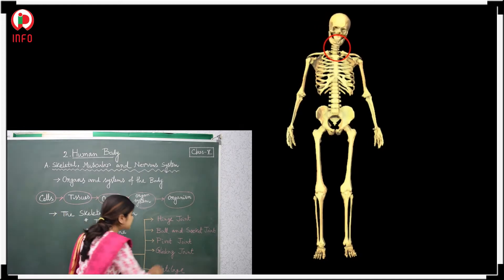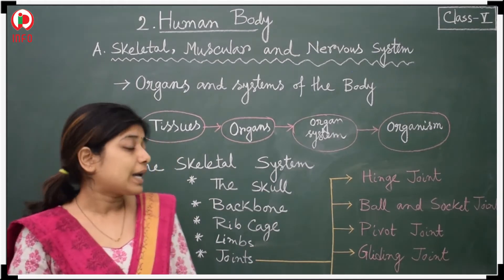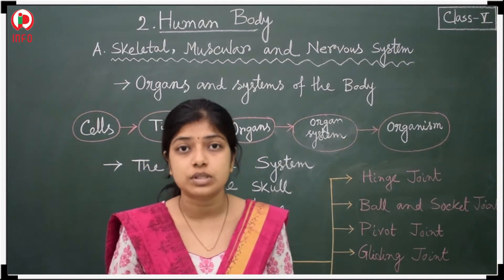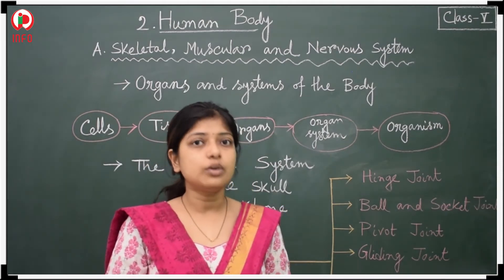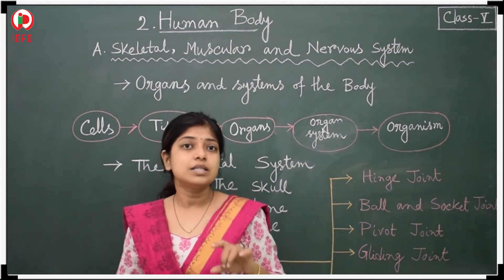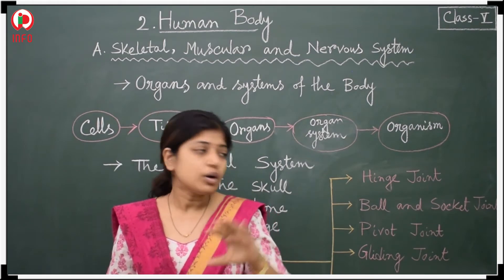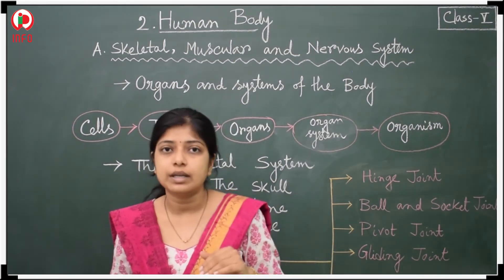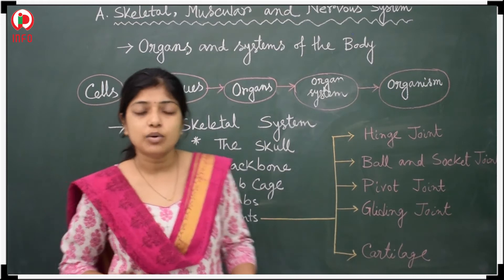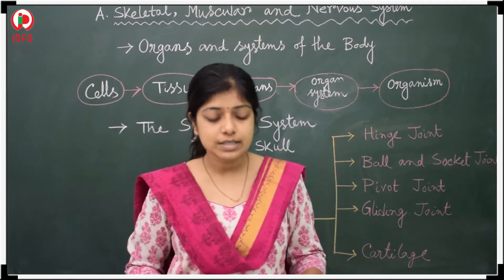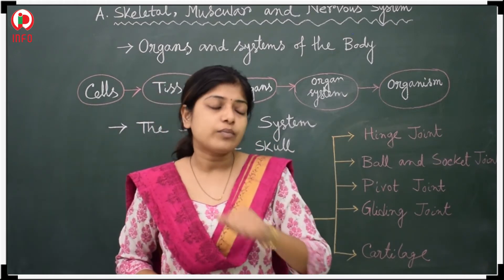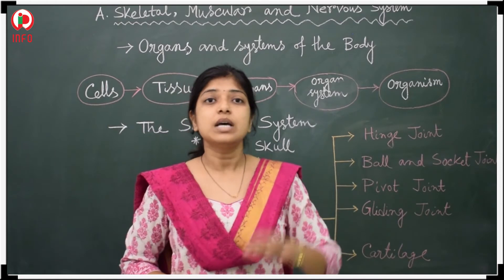Next, let us have a look at the gliding joint. The gliding joint connects different small bones. Our wrist and ankles consist of different small bones, and this kind of joint is located there. Now let us have a look at cartilage. Cartilage is also one important part of our skeletal system. It prevents our bones from rubbing against each other.